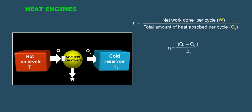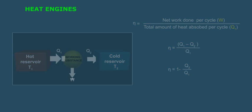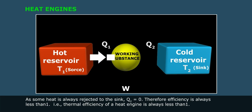Eta is equal to Q1 minus Q2 by Q1. Eta is equal to 1 minus Q2 by Q1. As some heat is always rejected to the sink, Q2 is not equal to zero. Therefore, efficiency is always less than 1.